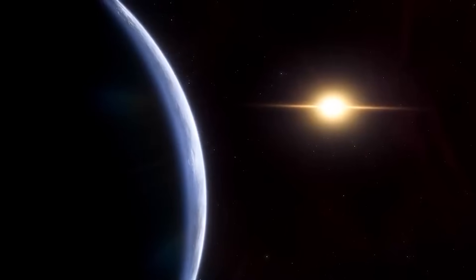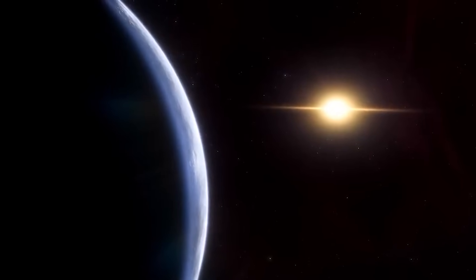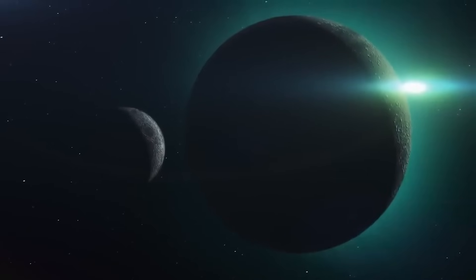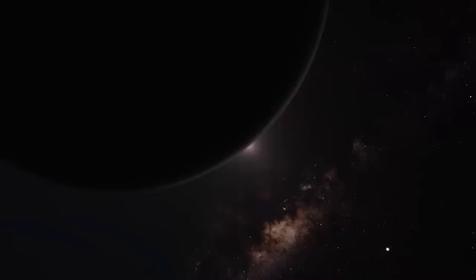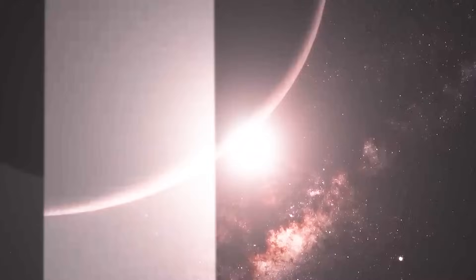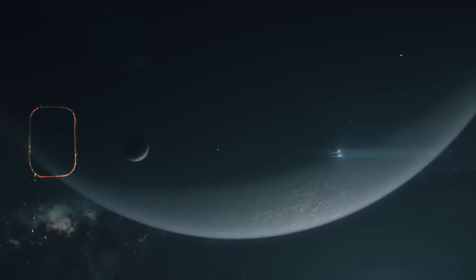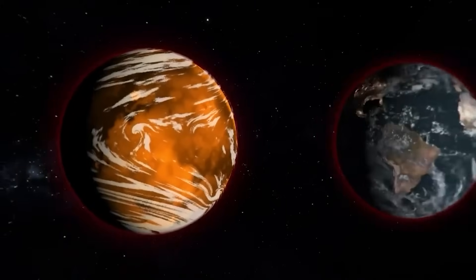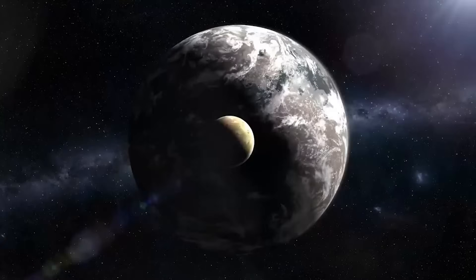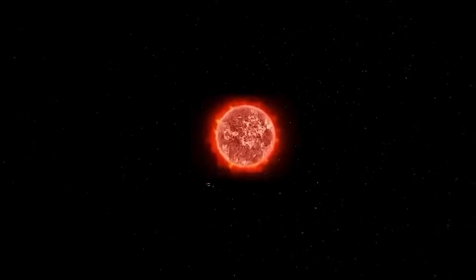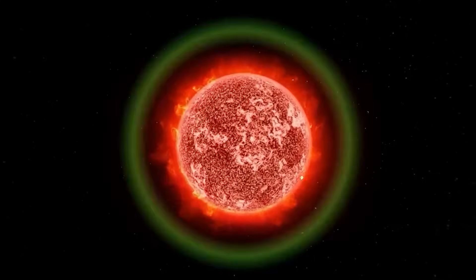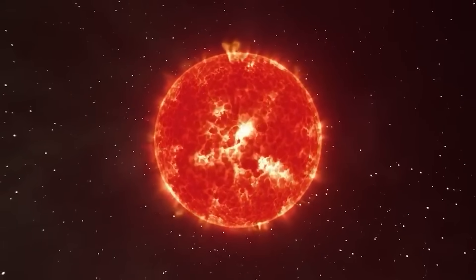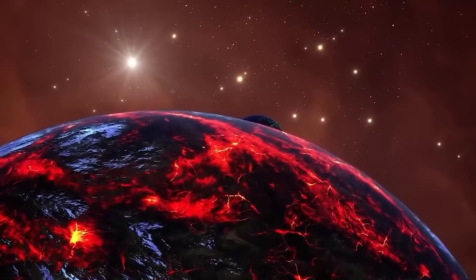Closer than expected. What if the next Earth-like world isn't as far away as we once thought? Recent discoveries have rocked the foundation of space exploration, revealing exoplanets that are startlingly close and might just harbor the conditions we need for life. One of the most electrifying revelations is the discovery of LHS-475b, an Earth-sized planet just 41 light-years away. What makes this one stand out is its rocky composition and its orbit around a red dwarf star.